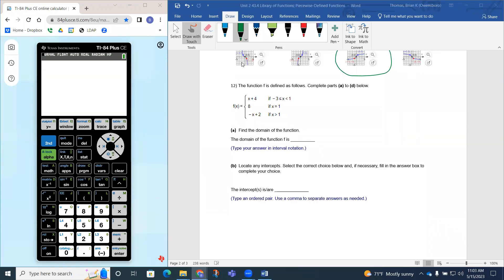Question 12 is when we get to a piecewise function. Notice that we have a function that's defined by three different functions. The function is defined as follows. We want to complete parts a through d below. Notice how the function is equal to x plus 4, but we only use this function if the domain is between negative 3 and 1, including negative 3 but not including 1.